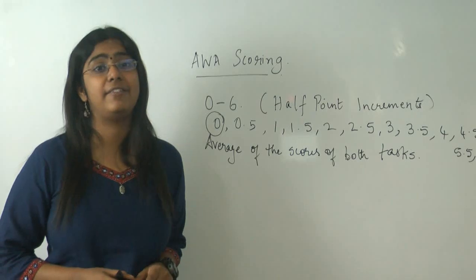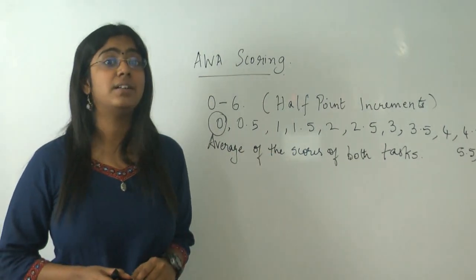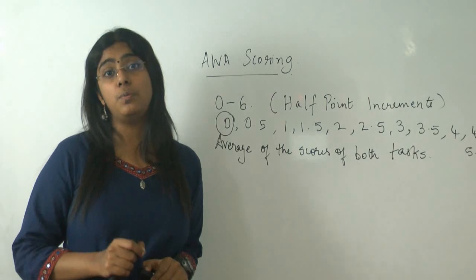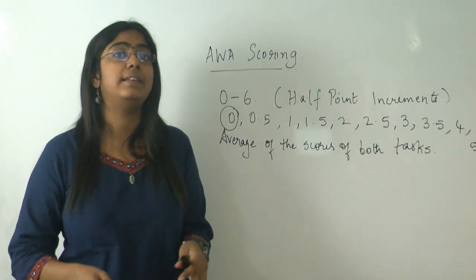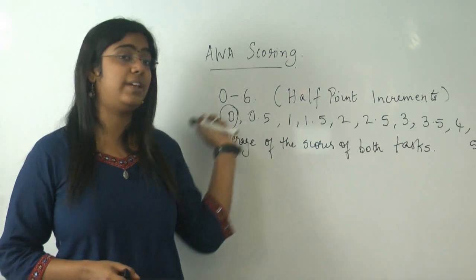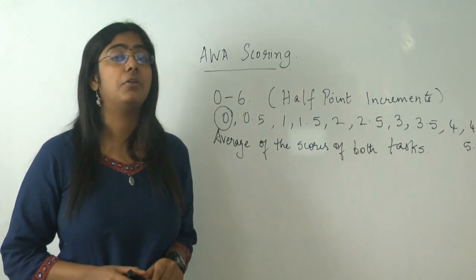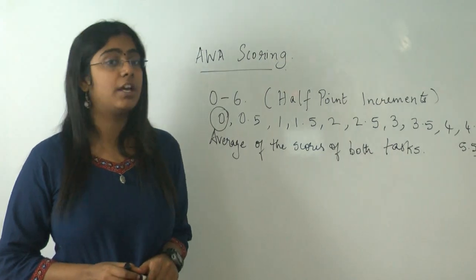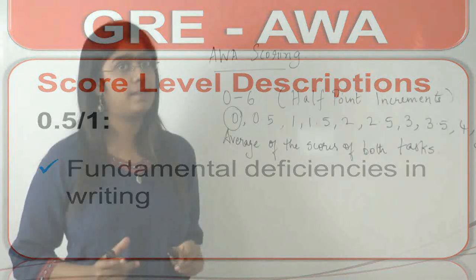Next, 0.5 and 1. This is very demeaning, remember. And even if you do manage to get a good GRE score in quants and the verbal part, if you get a bad score in the AWA part, it does not look good in the application scenario. So 0.5 or 1, it means that you have fundamental deficiencies in writing.